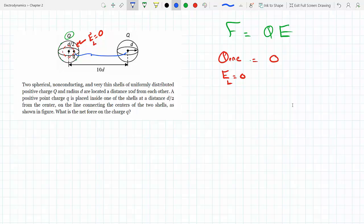This is 10d and the radius is d, so we can safely say that 10d is a lot bigger than d. It looks like a point charge located at the center at any point here. So for example, if I were to draw a Gaussian surface here...